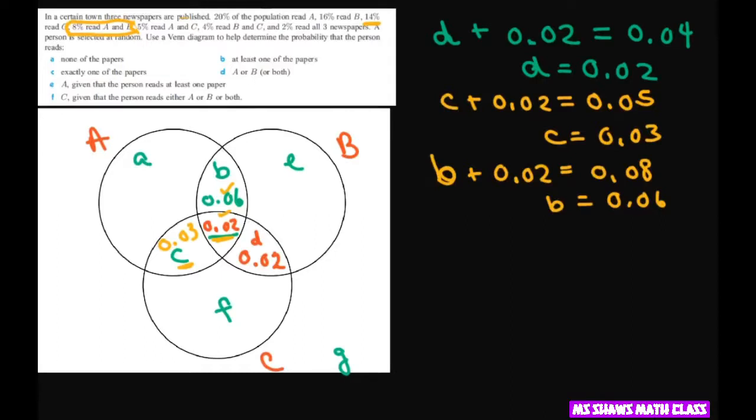Now it said 14% reads C. I'm working backwards. 14% read C. So here's your C. So you're going to say F you're going to say 0.03 plus 0.02 plus 0.02 plus F equals 14% or 0.14. And when you solve for F you're going to get F equals 0.07. So this is 0.07.